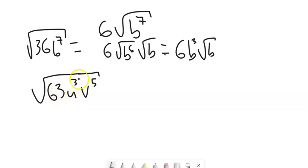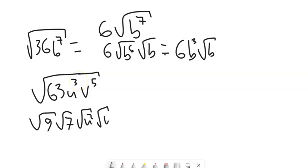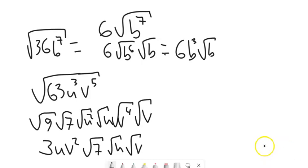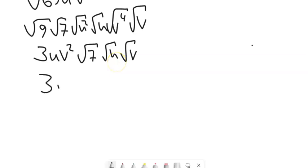Square root of 63 u cubed v to the 5th: I'm going to break this into pieces. 63 is 9 times 7 — I picked 9 because it's a perfect square. U cubed splits into u squared and u. V to the 5th splits into v to the 4th and v. Square root of 9 is 3; square root of u squared is u; square root of v to the 4th is v squared. What's left under the radical is 7uv. So the answer is 3 u v squared times the square root of 7uv.